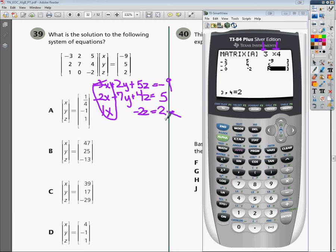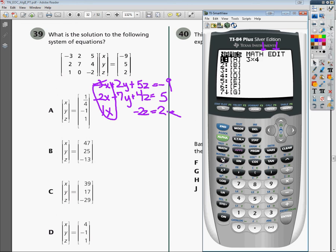Now, from here, I need to quit out of the matrix so I can use it. Now I'm going to go back into the matrix menu, and I'm going to go over to where it says math. In order to figure out what the actual values of x, y, and z are, I'm going to go down to the one that says rref. This one right there, 2 r's, e, and an f. You hit enter.